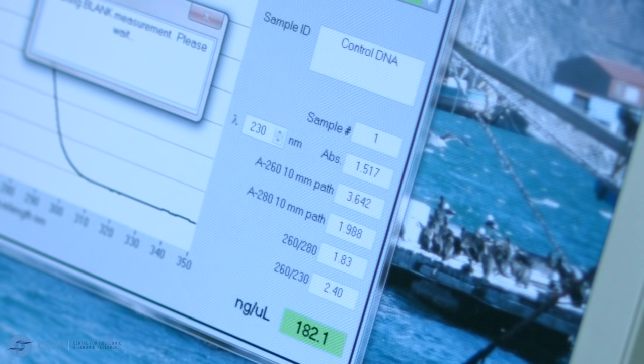The next thing we are going to do is to assess the DNA integrity, and the samples will be run on a 1% agarose gel. Loading buffer is added to each sample, including the DNA ladder, which will be used to run alongside the samples.